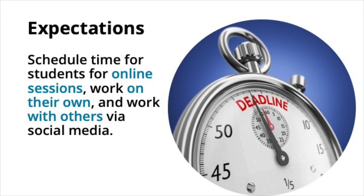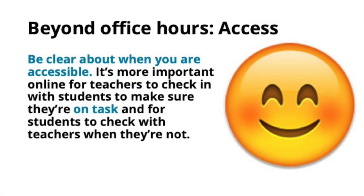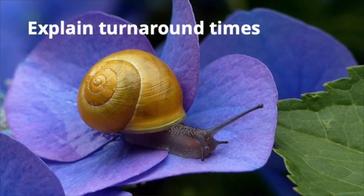You need to set up expectations and schedule time for students — when they're going to be taking their online classes, when they should be working on their own, when they should be connecting with other students to do assignments such as conversation. Unlike a regular school where you might have office hours, students are sometimes uncertain of when they should contact you. Encourage them to leave email messages. Also check in on your students regularly. Let students know your turnaround times — tell them: I will get back to you within 12 hours or 24 hours. If you don't hear from me after that time, please email me again.